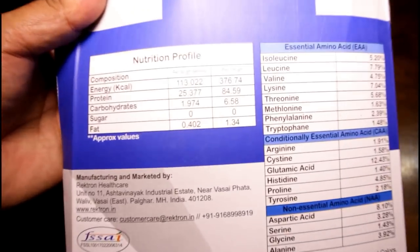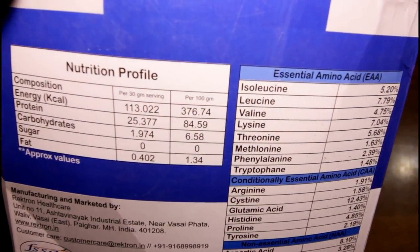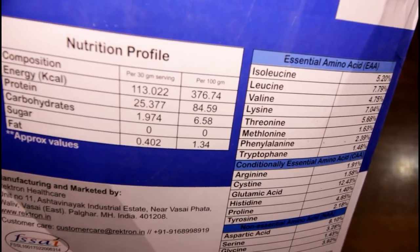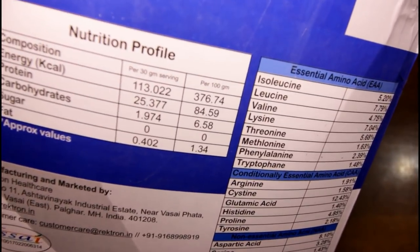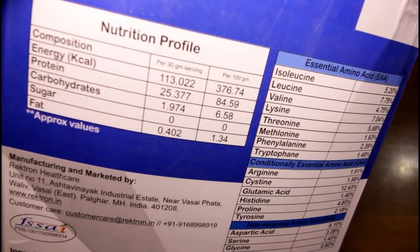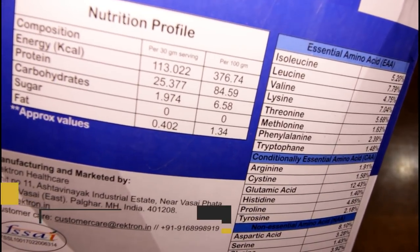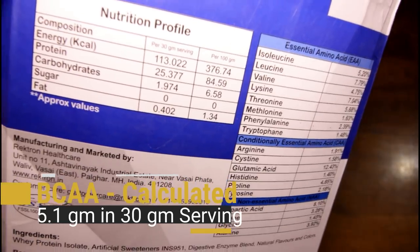And quickly running through the content. We got 30 grams serving. Gives you around 130 calories which is standard and then 25.377 grams of protein. There's a wee bit of carbohydrate, no sugar and just negligible fat. So that's what we got in here.